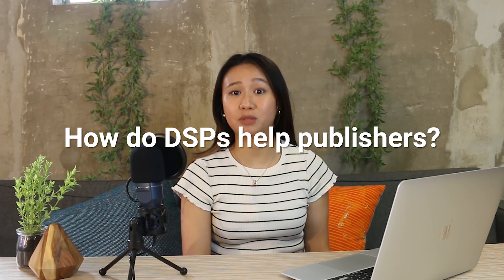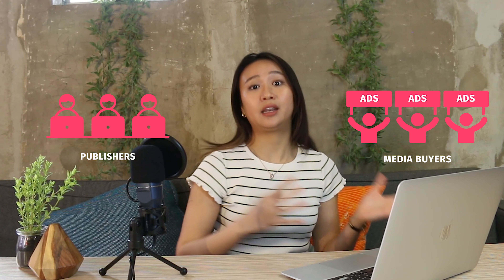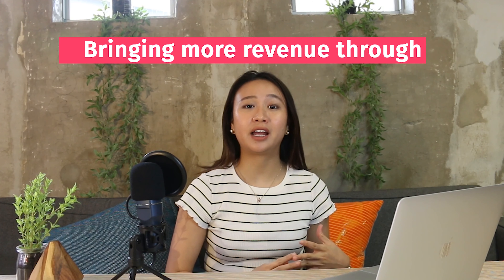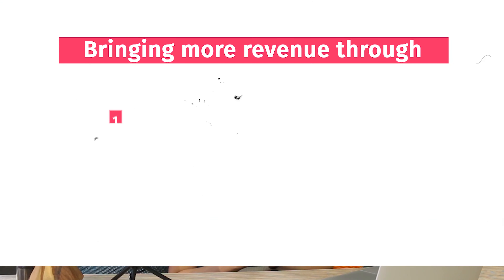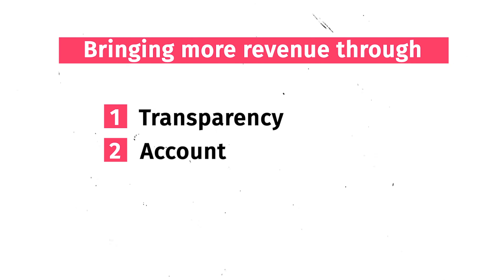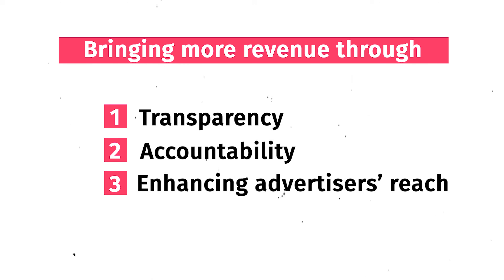How do DSPs help publishers? DSPs have disrupted and introduced key innovations to a process that was regarded as inefficient, due to the necessary negotiations and back-and-forths between media buyers or advertisers and publishers. Consolidating supply into a single platform that automates ad buying via real-time bidding helps to boost transparency, accountability, and widens advertisers' reach across various publisher websites. This means publishers have an easier time filling ad space and can focus on bringing in more revenue.